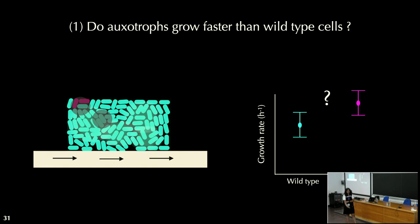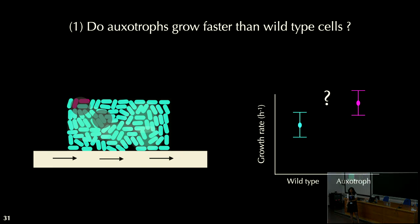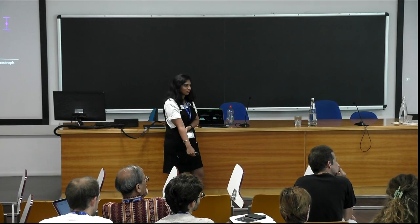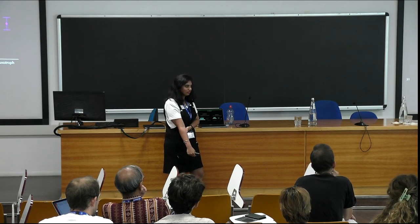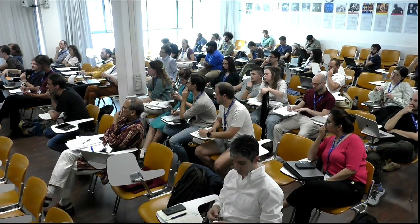The reason I expected to see faster auxotroph growth is because I was reading about the Black Queen hypothesis, where gene loss or genome streamlining can be potentially beneficial for a cell and can provide a growth advantage. Because the auxotroph lacks a big gene, if the pink cells are going to grow, it's going to be because the blue wild type cells excrete methionine — and that's what's expected to happen.